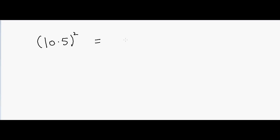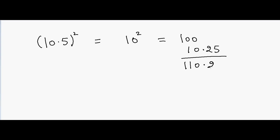Let me start with 10.5. If I have to take the square of this number, I will not take the 0.5 — I'll just take the number itself, which is 10. I'll do the square of 10, that will be equal to 100, and then I will just add 10 again with 0.25 in the end. So the answer will be equal to 110.25.